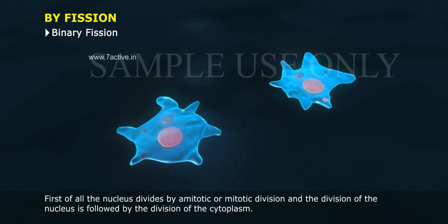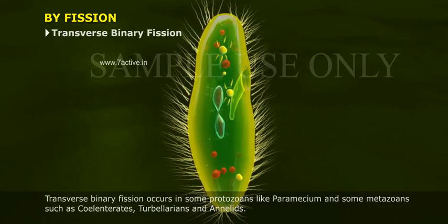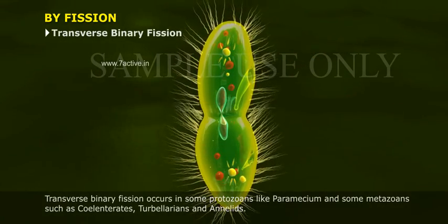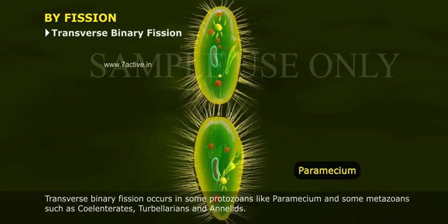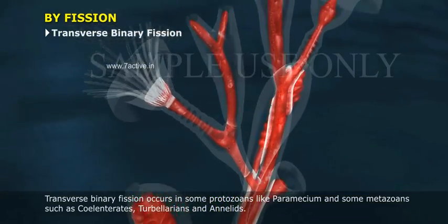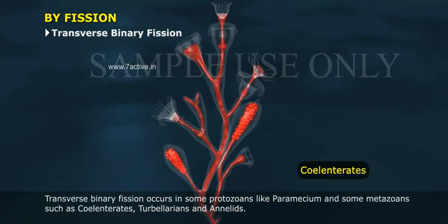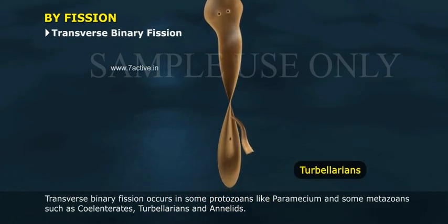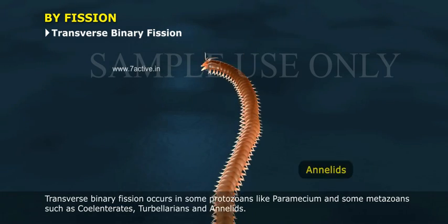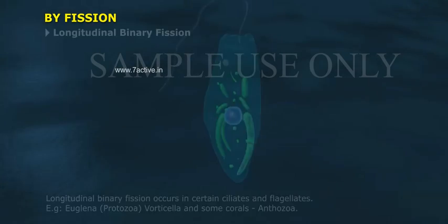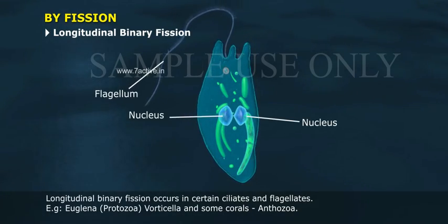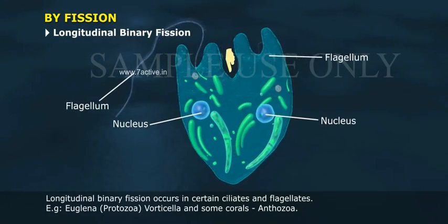First, the nucleus divides by mitotic division, and the division of the nucleus is followed by the division of the cytoplasm. Transverse binary fission occurs in some protozoans like Paramecium and some metazoans such as cylindrates, tubularians, and annelids. Longitudinal binary fission occurs in certain ciliates and flagellates.